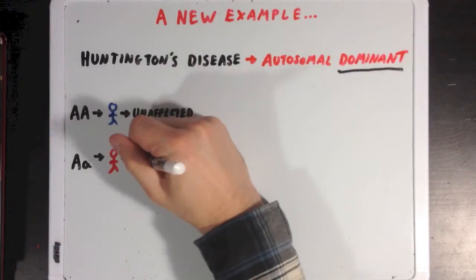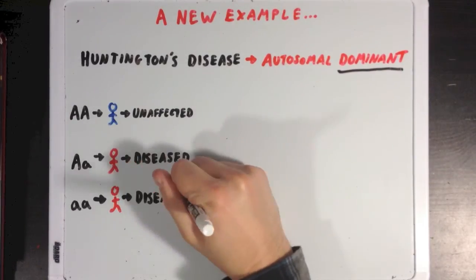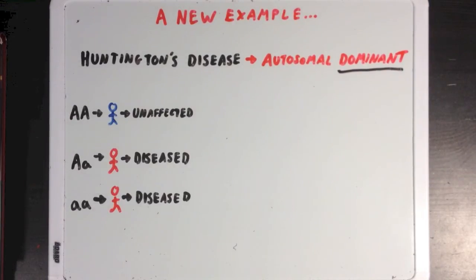However, if a person has either one or two copies of the gene, then that person will be affected by the disease either way. And I've drawn both of these people in red.